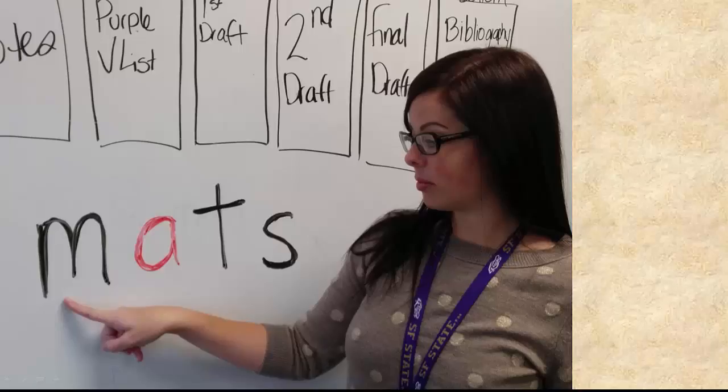Use a dry-erase whiteboard or butcher paper for the sound-by-sound spelling blending activity. Write consonant sounds in black marker and vowel sounds in red. Make sure to clip, not elongate, the consonant sounds — for example, don't say 'buh' or 'beh.' Let's practice how to teach the sound-by-sound spelling blending on the first spelling set: /a/, /m/, /t/, and /s/. The short vowel /a/ is on the anteater card, the consonant /m/ is on the mouse card, the consonant /t/ is on the tiger card, and the consonant /s/ is on the seagull card.